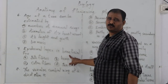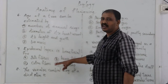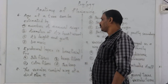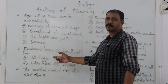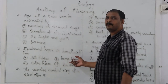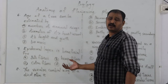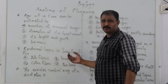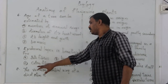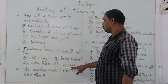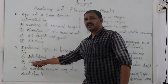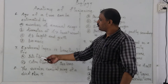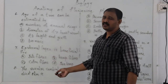Next question: the epidermal layer is beneficial for — option A: jute fibers, option B: hemp fibers, option C: cotton fibers. The correct answer is cotton fibers. Cotton fiber is derived from the epidermal layer.